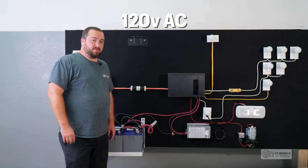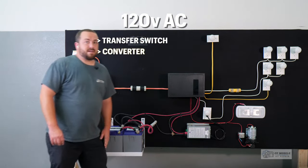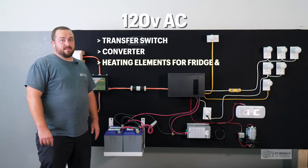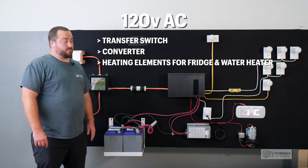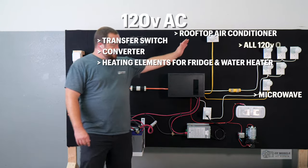The 120 volt AC system includes the transfer switch, our converter which charges our batteries, not an inverter which we will cover in future videos, the heating elements for the fridge and water heater, the rooftop air conditioner, the microwave, and all of our 120 volt outlets.